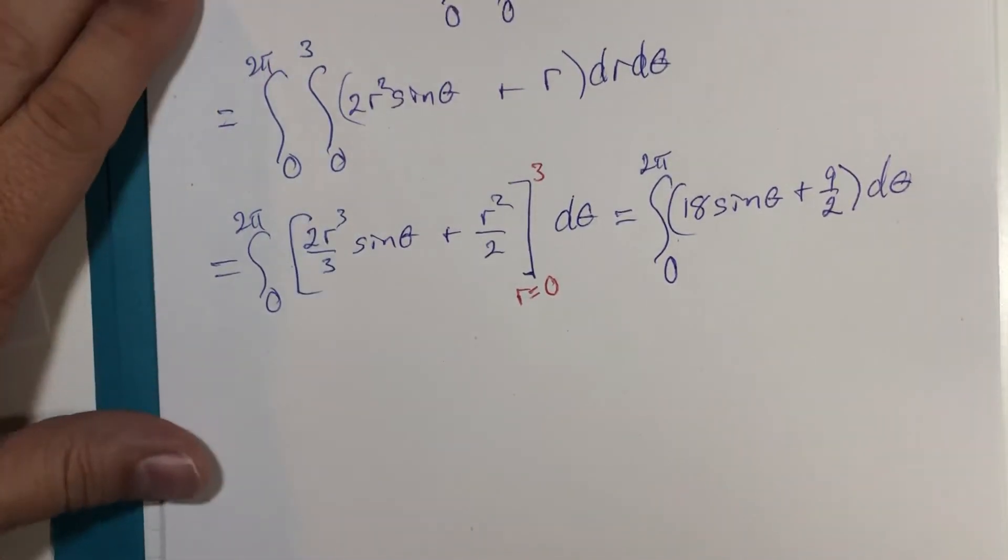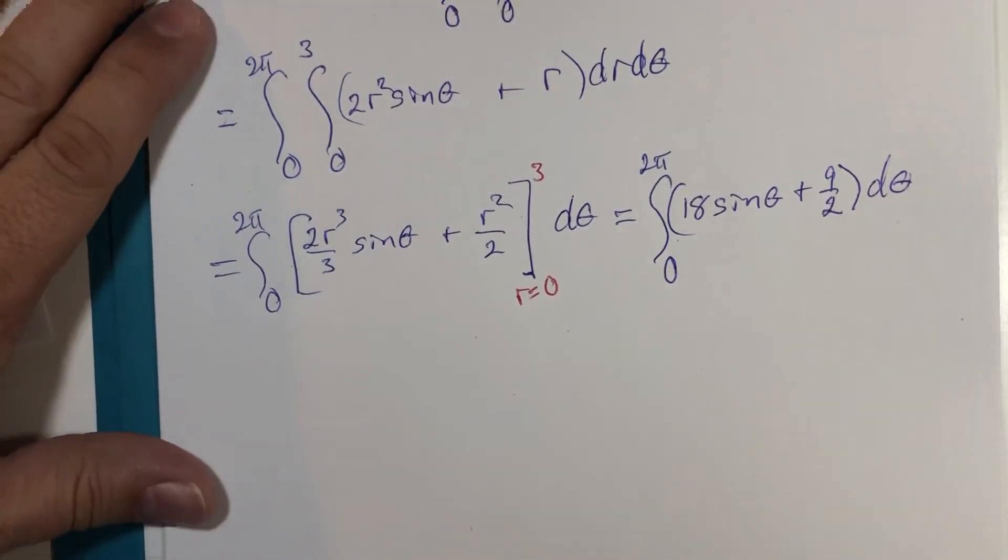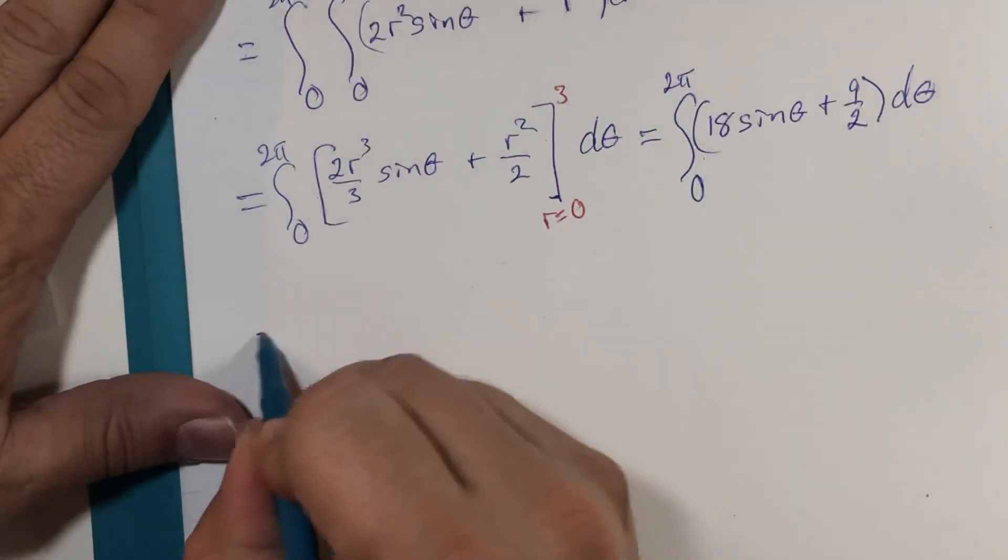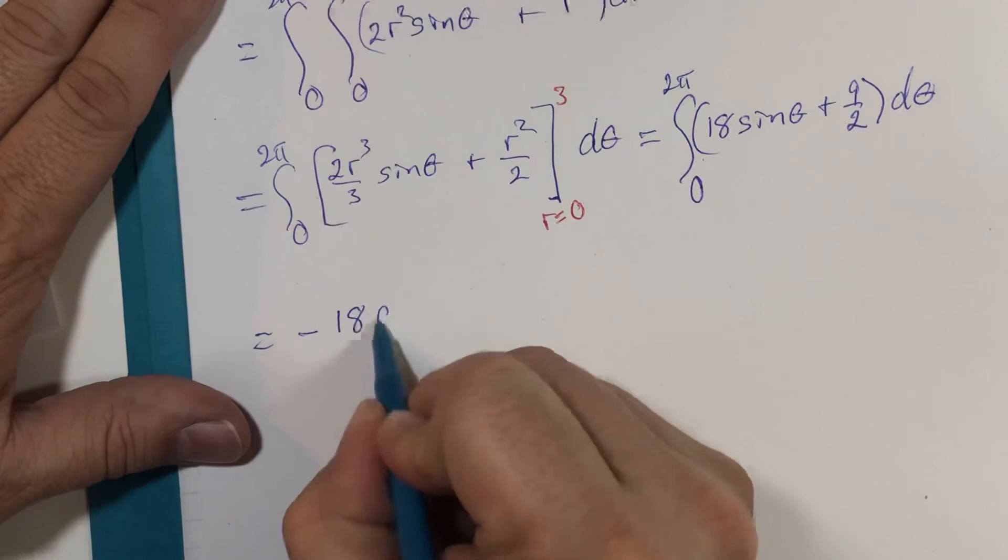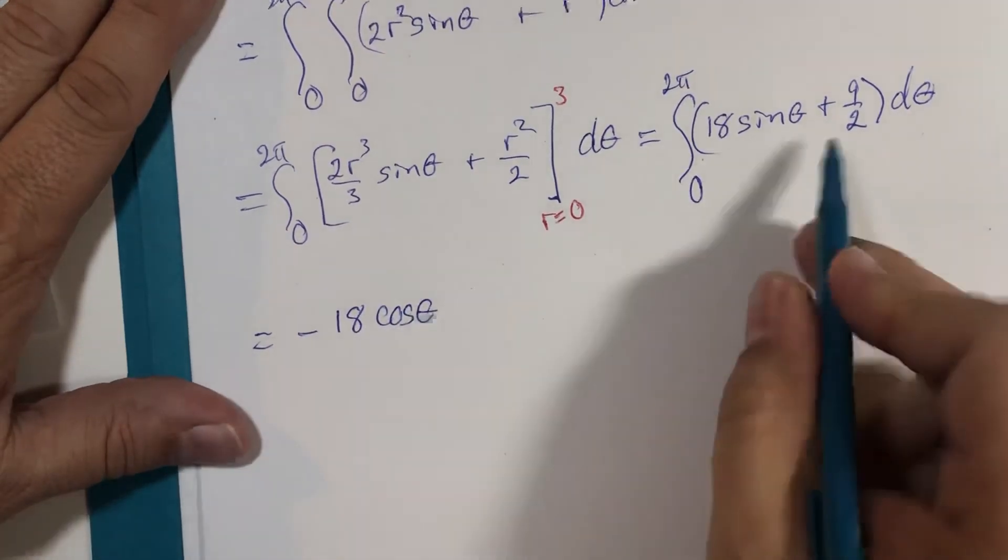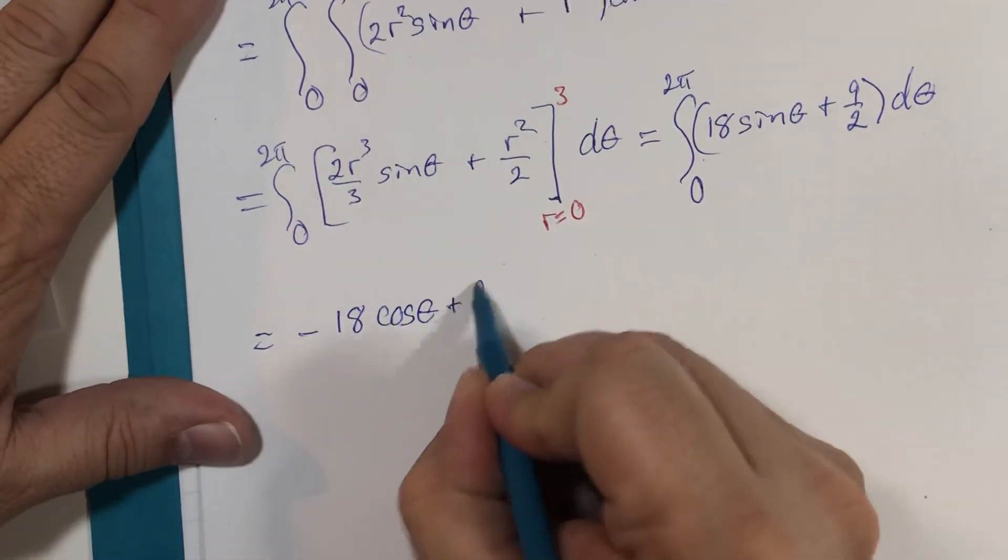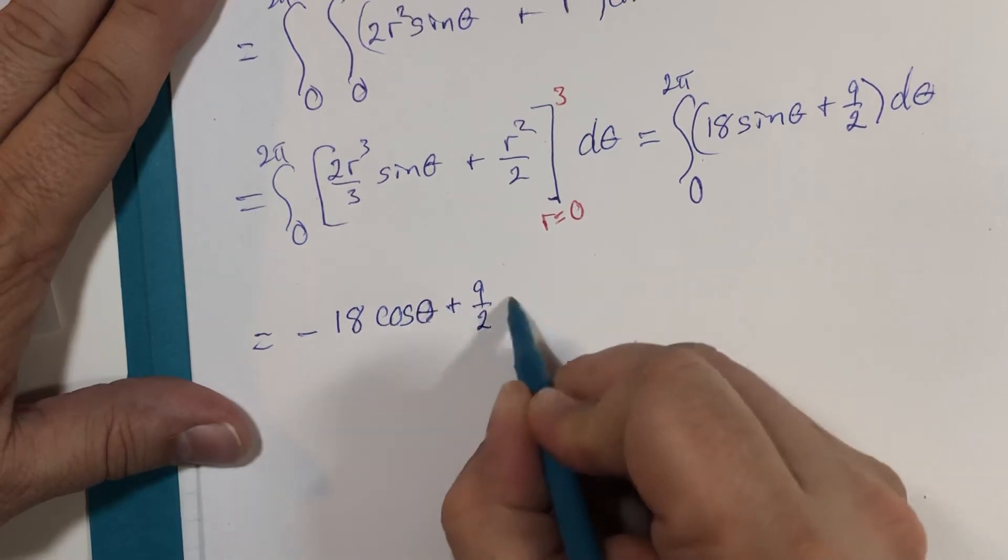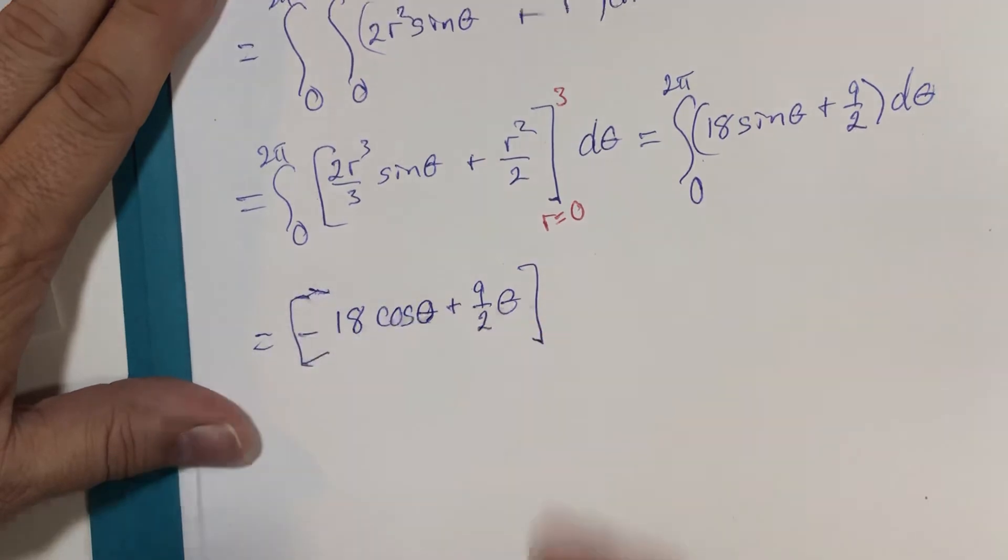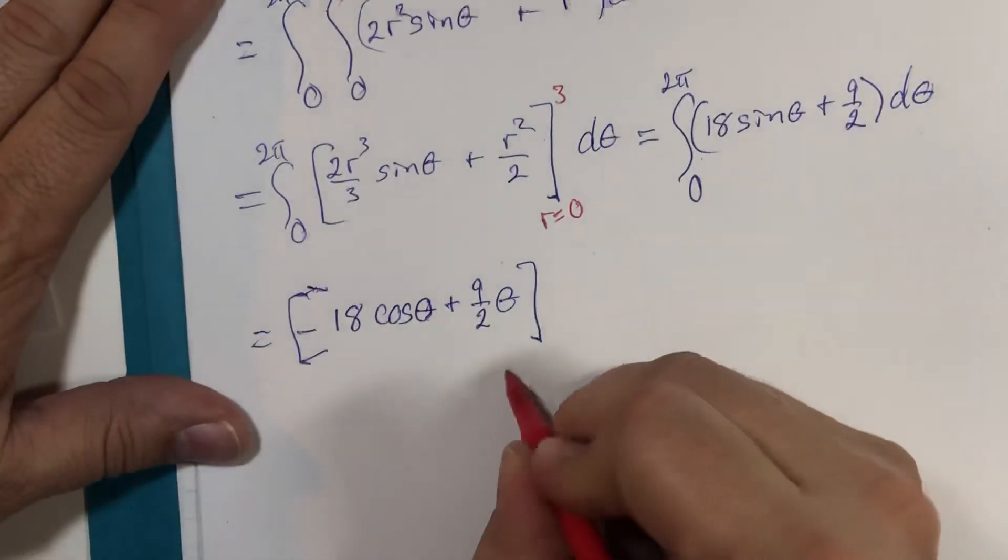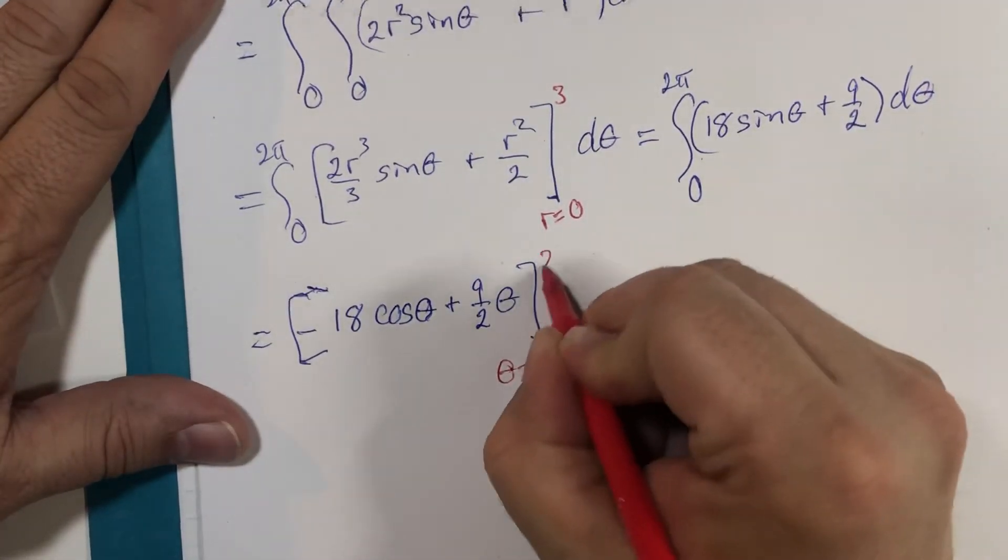All right. And now theta is a variable and we'll integrate. The integral of sine is negative cosine. The integral of 9 halves is 9 halves theta.